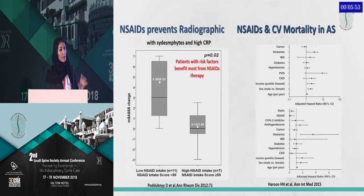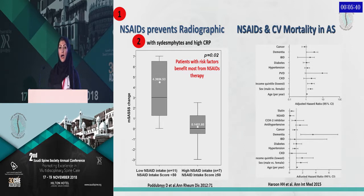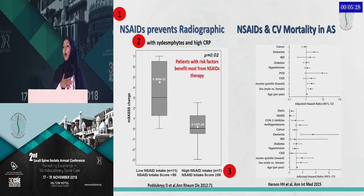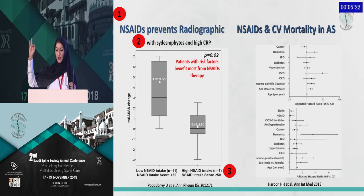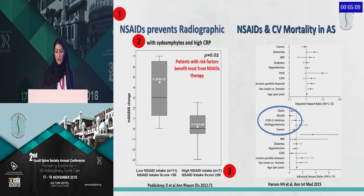Studies showed that NSAIDs improved radiographic progression of spondyloarthropathy. They are most effective in patients with active inflammation — either by high CRP or a positive MRI showing active inflammation. The third point is that you should start with the high dose and use it continuously. As an internist, my biggest concern with NSAIDs is heart failure and peptic ulcer disease, in addition to cardiac events. However, a meta-analysis showed no increase in cardiovascular events — the lines are on the left side in comparison to other medications.